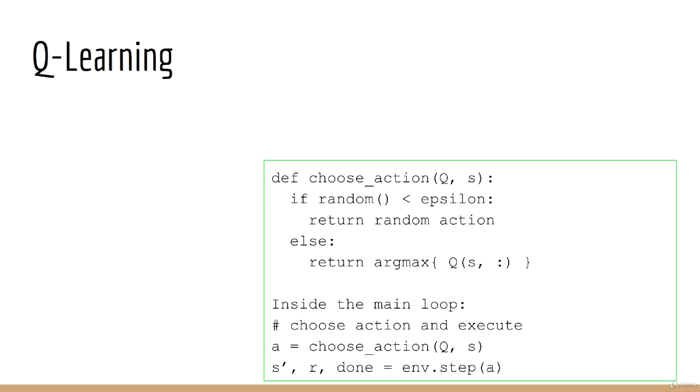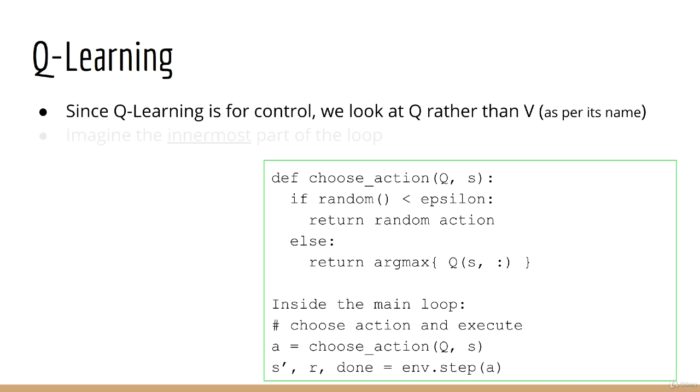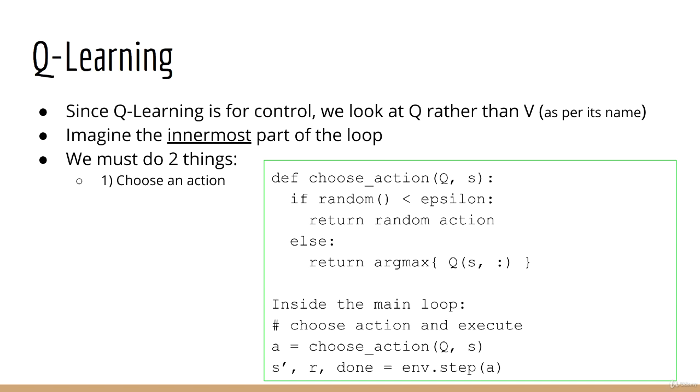As before, because Q-learning is a control algorithm, we are interested in updating Q rather than updating V. At a high level, we are mostly interested in the innermost part of the loop. That is, where we choose an action and take a step in the environment, and where we update the Q table. So these are the two pieces we are going to focus on here.